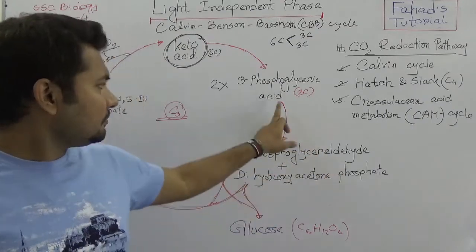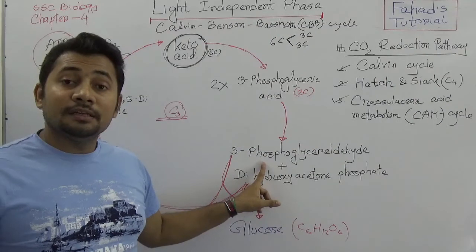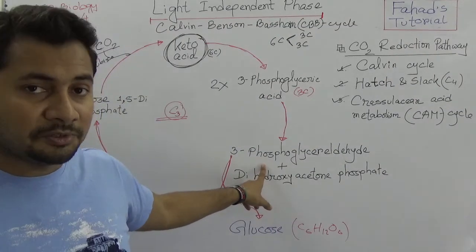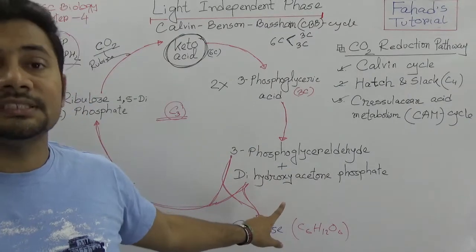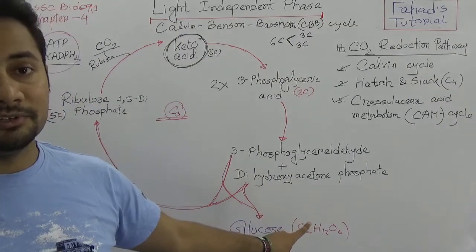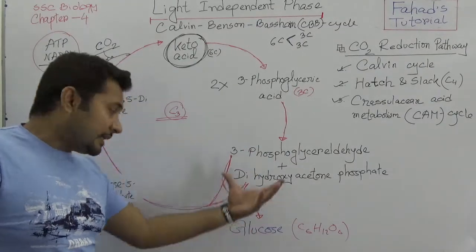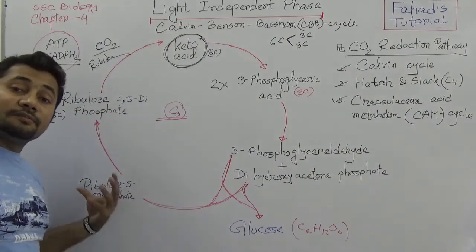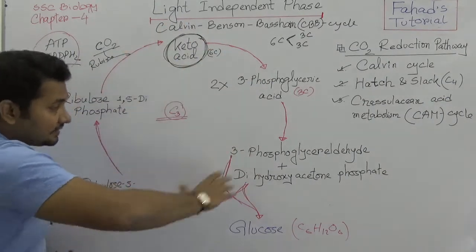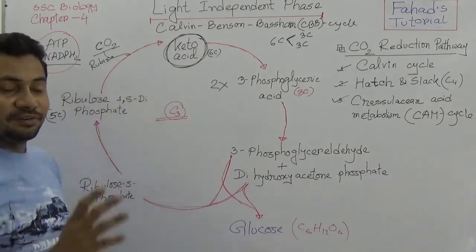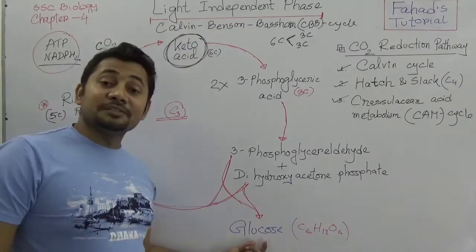Since there are two molecules of phosphoglyceric acid — from one molecule, 3-phosphoglyceraldehyde is produced, and from the other molecule of phosphoglyceric acid, dihydroxyacetone phosphate is produced. From these two, on one side glucose will be produced, and on the other side ribulose-5-phosphate will be produced, which continues the rest of the cycle. This is the cyclic process by which glucose is produced.